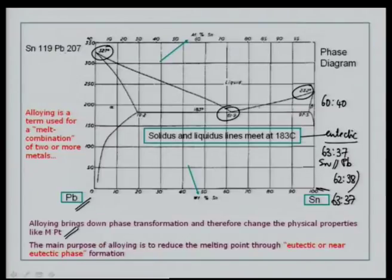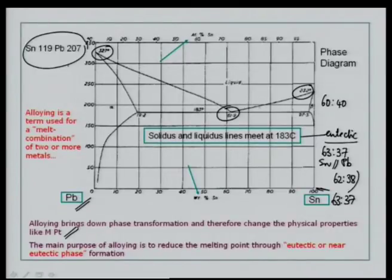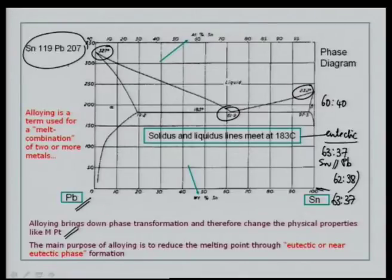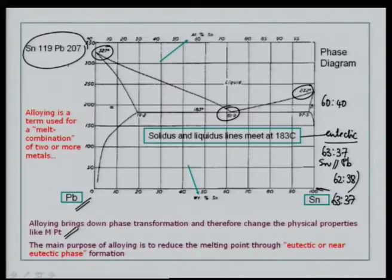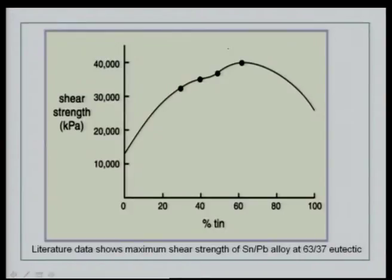The atomic weights of tin and lead are relevant here. If you look at the atomic percentages of tin and lead, they will be slightly different from the weight percentages. The 63-37 we are talking about is actually the mass weight percentage composition of tin and lead. One needs to understand the tin-lead phase diagram because if you are choosing tin-lead alloys other than 63-37, you need to know the melting points, which will definitely be higher than 183°C for all other systems.